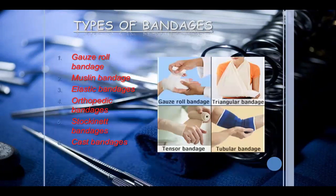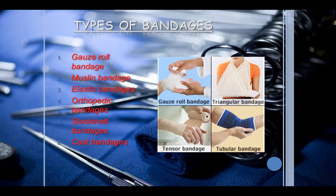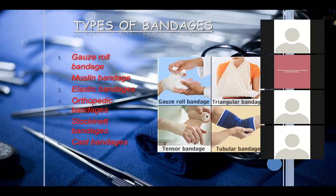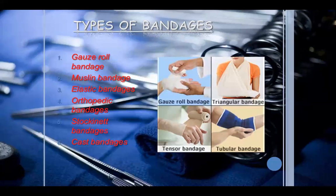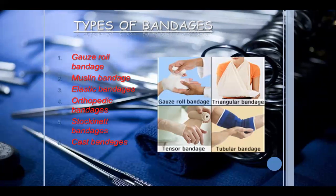Various types of bandages include: gas roll bandage, made up of gauze cloth; muslin bandage and cotton bandage; elastic bandage; orthopedic bandage; stockinet bandage; and cast bandage. You can see in the picture that a lady with a fracture is wearing a triangular bandage. There is also tensure bandage, used for fixing dislocations, and tubular bandage, applied at joints such as elbows where there is pain.